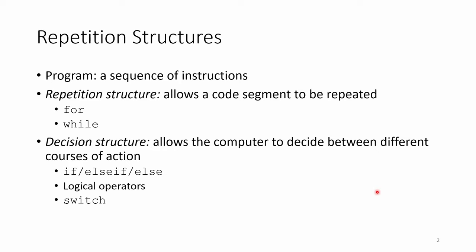Holistically, any computer program can be interpreted as a series of instructions. All programs can be built from a combination of repetition structures and decision structures. As the name implies, repetition structures tell the computer to repeatedly execute a block of code. There are two main repetition structures in MATLAB, the for and the while loop.